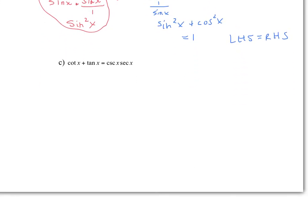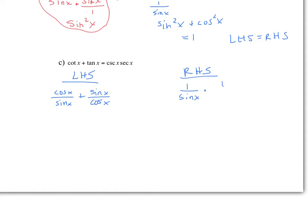One last one: cotan plus tan equals cosecant times secant. Notice I can change cotan to cos over sine, tan to sine over cos, cosecant to one over sine, and secant to one over cos. So maybe I'll change both sides. On the left-hand side: cotan is cos x over sine x, plus tan which is sine x over cos x. On the right-hand side: one over sine x times one over cos x. Everything is now in sine and cos. Notice the left-hand side has two terms — fraction plus fraction — while the right-hand side is one term multiplied together. So I need to get a common denominator and combine the fractions on the left.